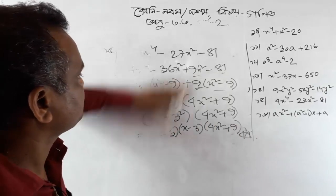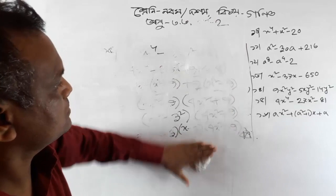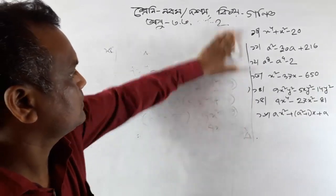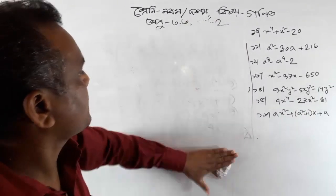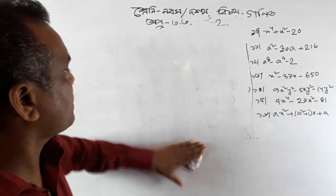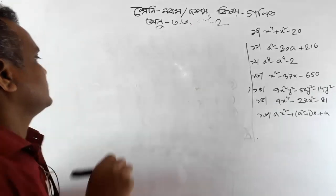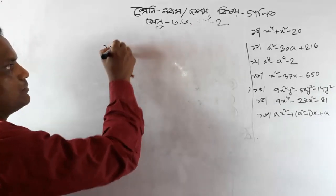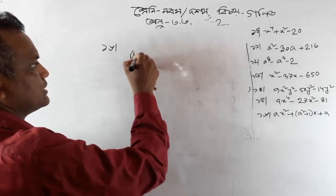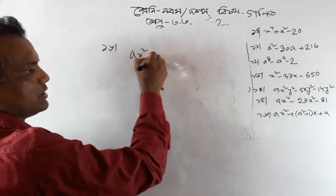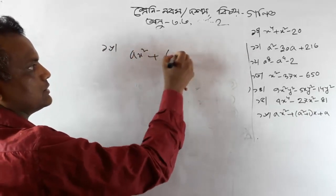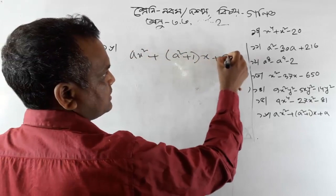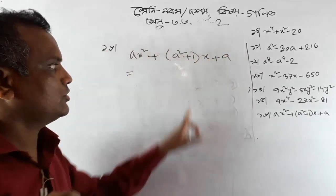Now let's take a look at this. This is what is x squared minus 1. This is x squared plus 1 into x plus a. This is very interesting.